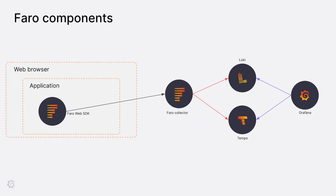Let's see how Faro is built. Faro consists of two parts. The first one is Faro Web SDK. Faro Web SDK is a JavaScript library that you can add to your project in a couple of seconds. Once the library is added, it automatically starts sending data to the Faro Collector. Faro Collector processes the data and then stores it in Loki and Tempo from where it is picked up by Grafana to visualize it.